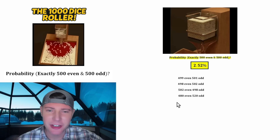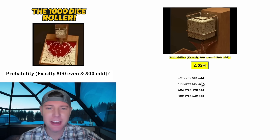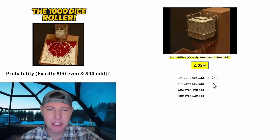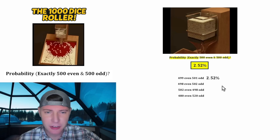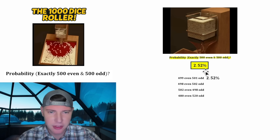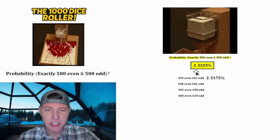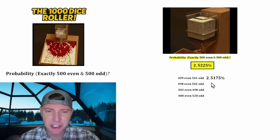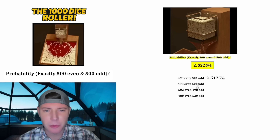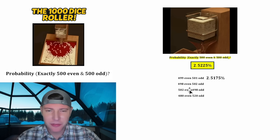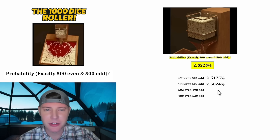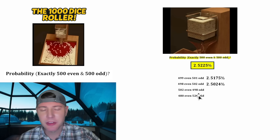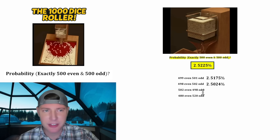Now I'm kind of curious — what about these other scenarios? 499 even and 501 odd ends up being also 2.52%, but this one should be smaller than the exact 50-50. Moving them out a little bit: the exact 500-500 was 2.5225%, the 499 even and 501 odd would be 2.5175%, the 498 even and 502 odd would be 2.5024%, and the 502 even and 498 odd is also 2.5024%.